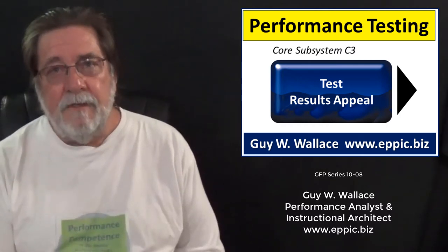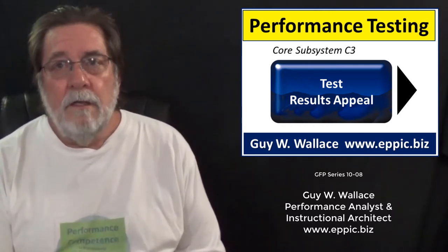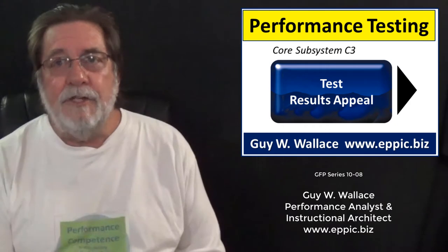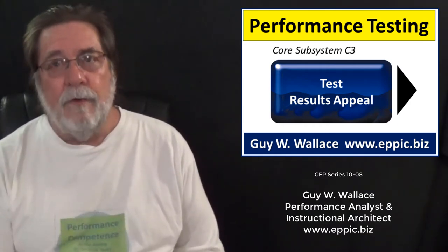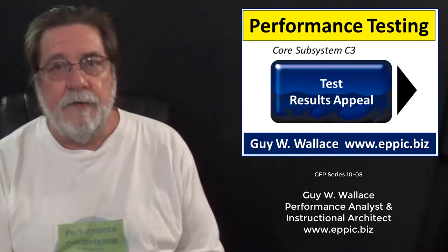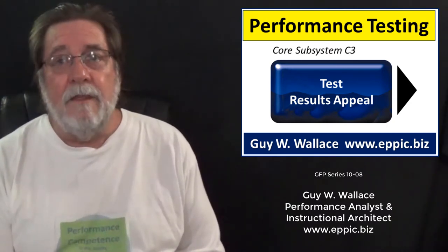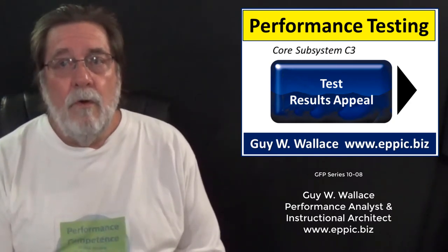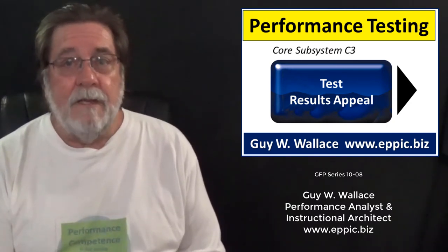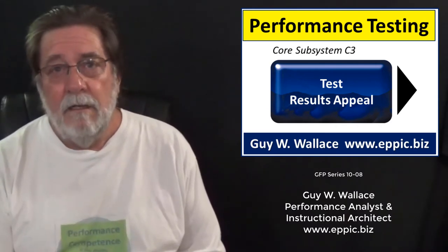Core Subsystem 3: Test Results Appeal. This is where a challenged test result enables the candidate retaking the test with a different assessor, or, if this has already been done, denying the appeal or passing the appeal up through an appeals hierarchy.